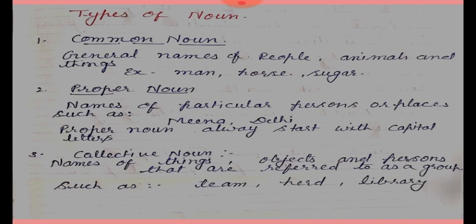Third, collective noun. Collective noun is the name of things, objects, and persons that are referred to as a group, and that we can count. For example: team is a group of persons, herd is a group of elephants or animals, and library is a collection of books.